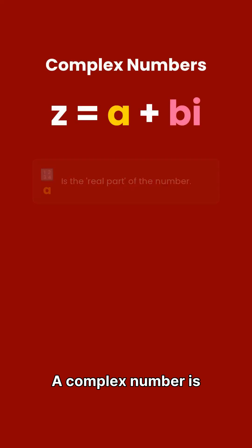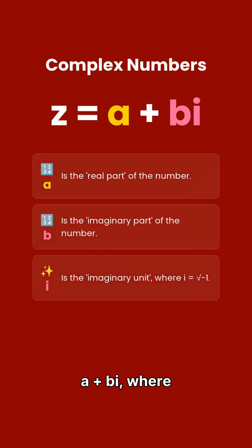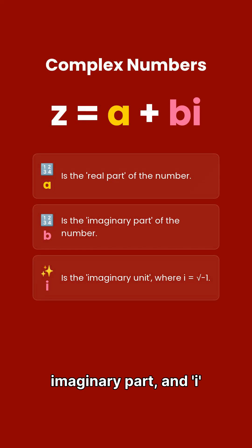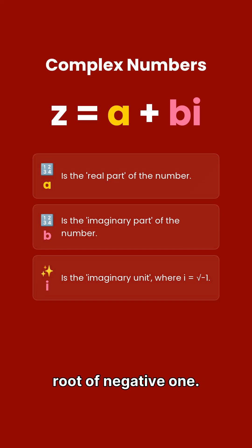A complex number is written as c equals a plus bi, where a is the real part, b is the imaginary part, and i is the imaginary unit, defined as the square root of negative 1.